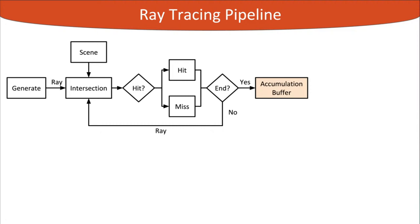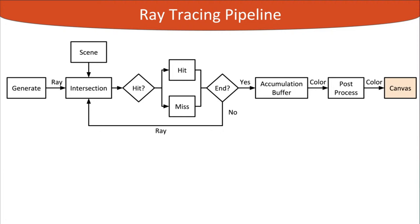After the recursion depth is reached, or no rays are submitted, the pipeline switches to the accumulation stage, where the calculated results — typically pixel color — are blended with results of previous pipeline executions. The accumulated values are then submitted to a post-processing stage for final filtering, and post-processed values are submitted as RGB color values to the frame buffer.